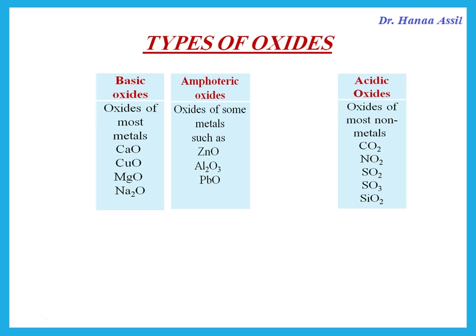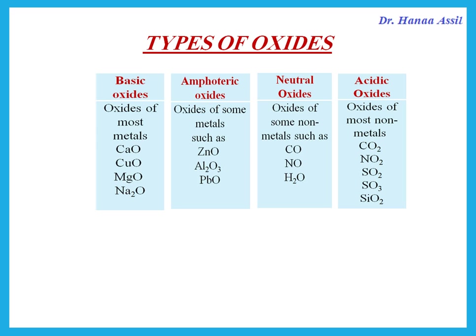So if you put an amphoteric oxide with an acid, it reacts as a base. If you put it with a base, it will react as an acid. Also, if we say oxides of non-metals are acidic, there are some exceptions — some oxides of non-metals are neutral. For example, carbon monoxide, nitrogen monoxide, and the oxide of hydrogen, which we refer to as water, is a neutral oxide.